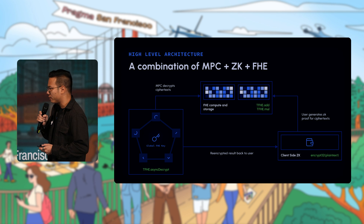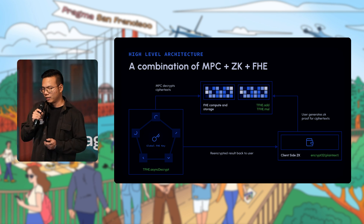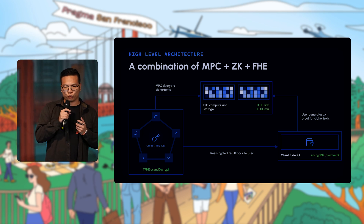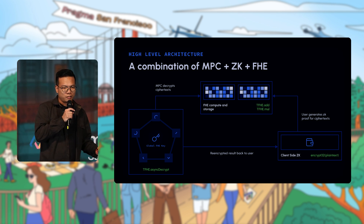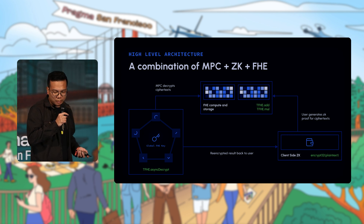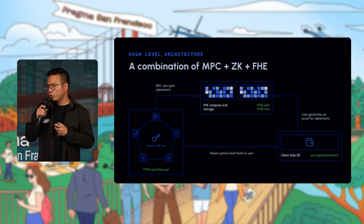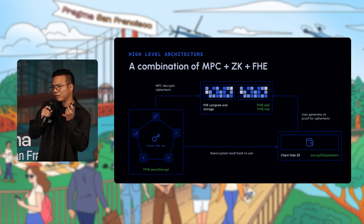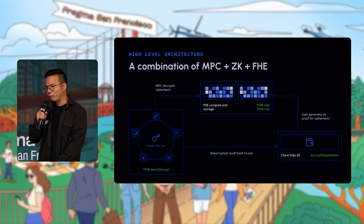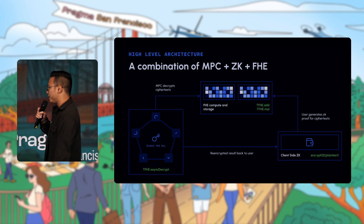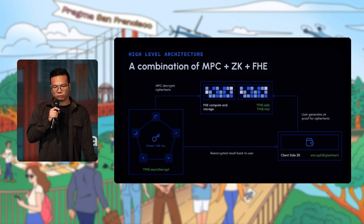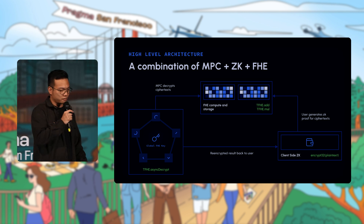Lastly, the ZK piece: every time you encrypt something on the client side, you want the user to prove that the ciphertext is well-formed, because malformed ciphertexts would cause computation issues later. Second, the user needs to prove they know the plaintext — otherwise someone could copy-paste your ciphertext from on-chain and redeploy it, causing information leakage. ZK is applied here purely as proof of knowledge and proof that the ciphertext is well-formed.